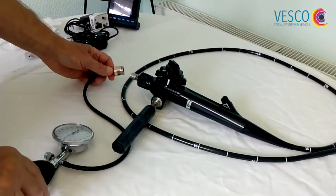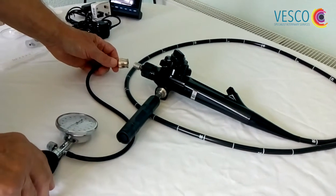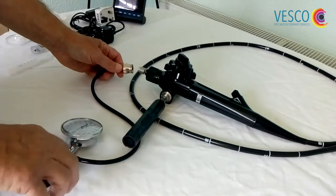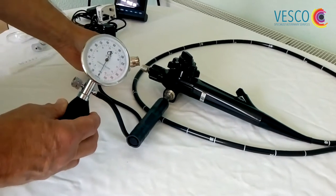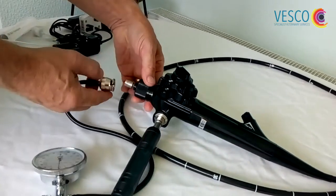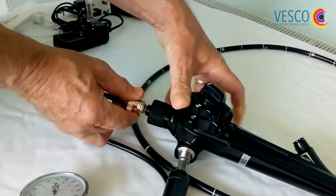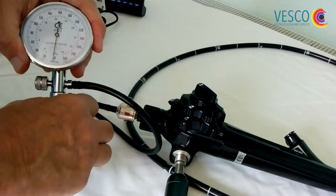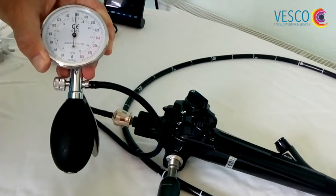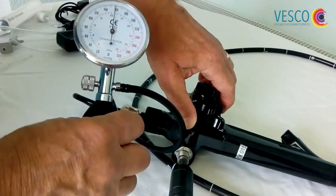Before we proceed any further, as with all endoscopy, it is very important that you leak test the scope prior to use, purely to make sure that you don't have any leaks. If the scope leaks, when the pressure drops from the leak tester, I would strongly advise against using the scope. On this particular model, we're going to attach the leak tester to the end of the scope, simply press and twist, and pump the scope up to around 160 on the gauge. Leave that to settle for maybe 30 seconds or so, but what is important is that we move the scope through all four angles.